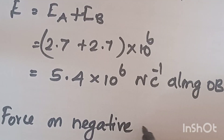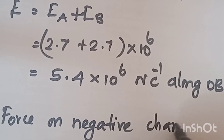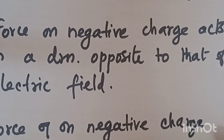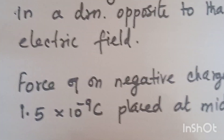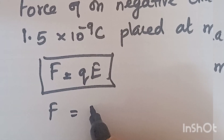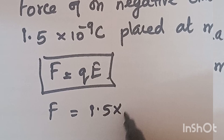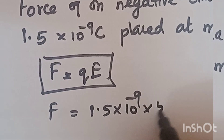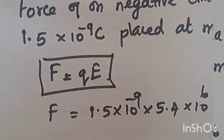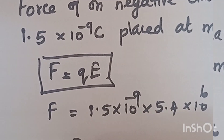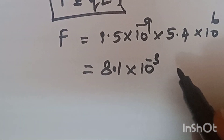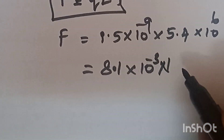Now we find the force on the negative charge placed at the midpoint. The formula is F equals QE. F is equal to Q, which is 1.5 into 10 power minus 9 coulomb, multiplied by E equal to 5.4 into 10 power 6. So F equals 8.1 into 10 power minus 3 newton.